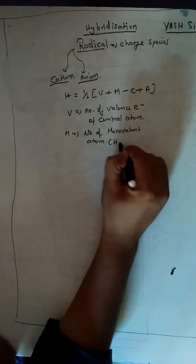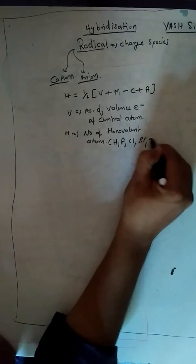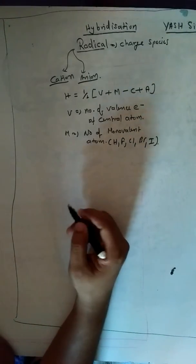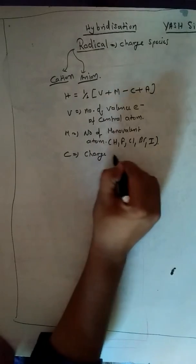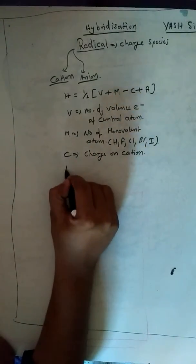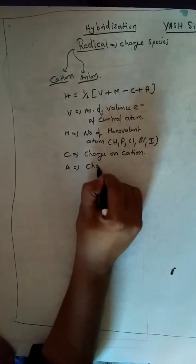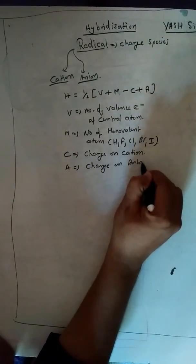For example, I can give you hydrogen, fluorine, chlorine, bromine, and iodine. They can form single bonds. C stands for charge on cation. A stands for charge on anion.